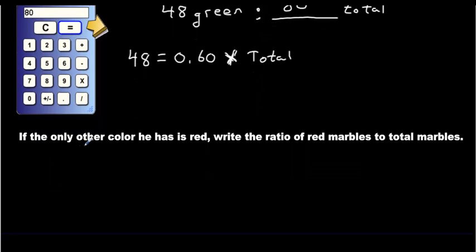But now the last one. If the only other color he has is red, write the ratio of red marbles to total marbles. Now look, we know how many total there are. There's 80 marbles in total. So we can write 80 total.